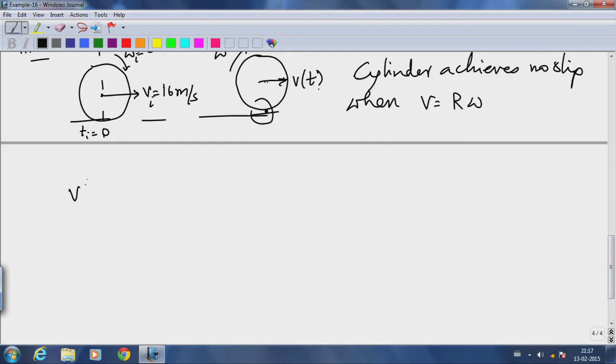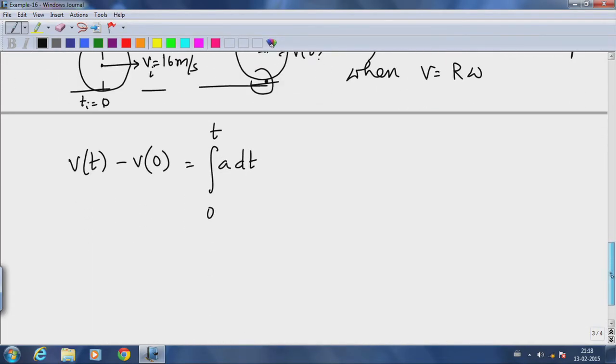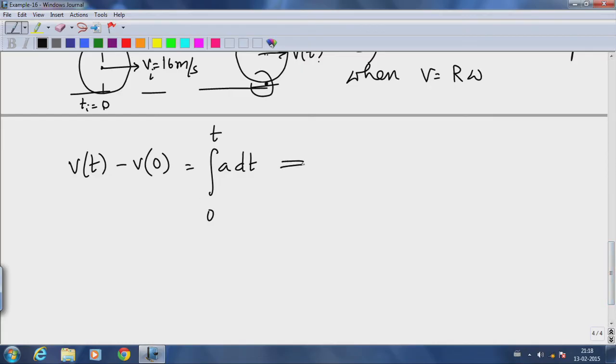So if I write what is v of t, v of t minus v at the instant zero equals integral from zero to t of a dt.